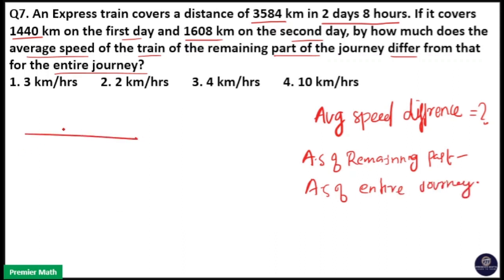Here a train travels 3584 km total distance in 2 days and 8 hours. That is 48 plus 8 equals 56 hours.